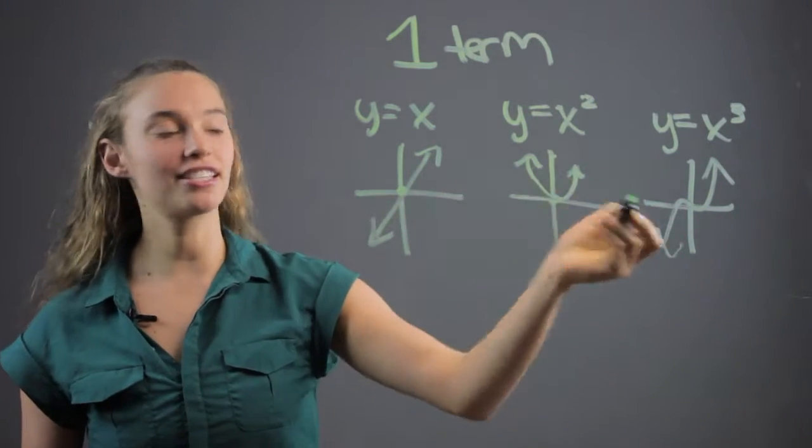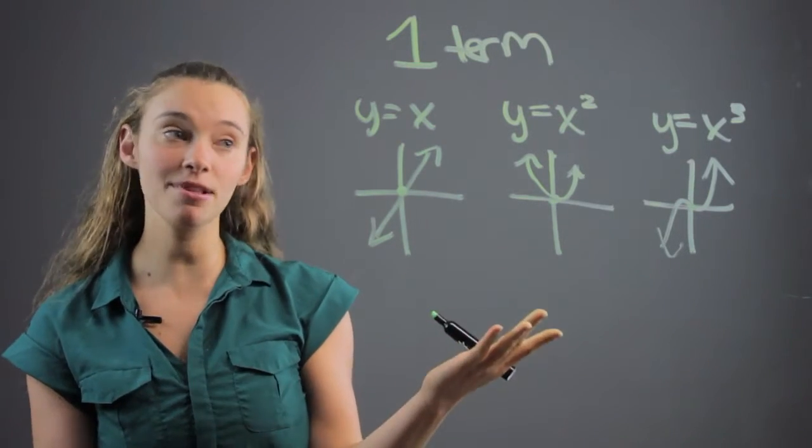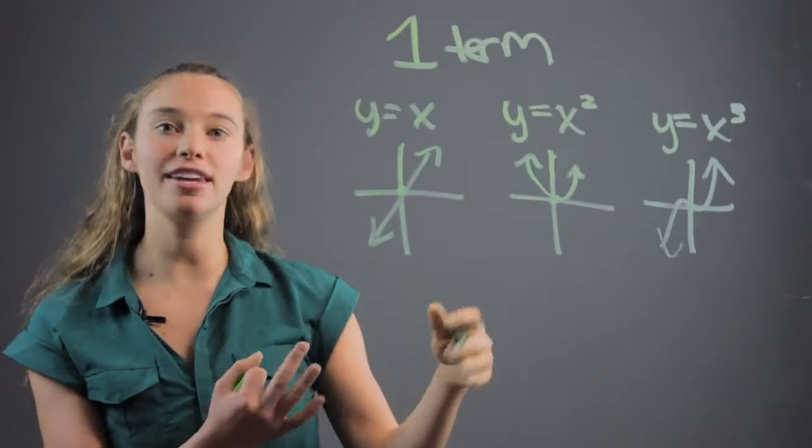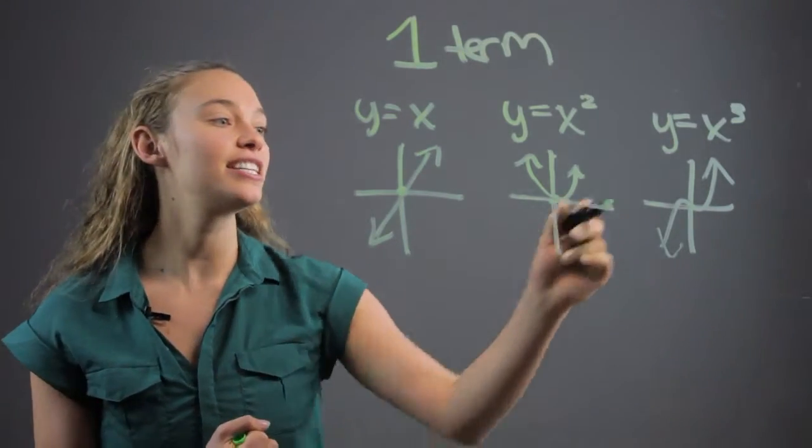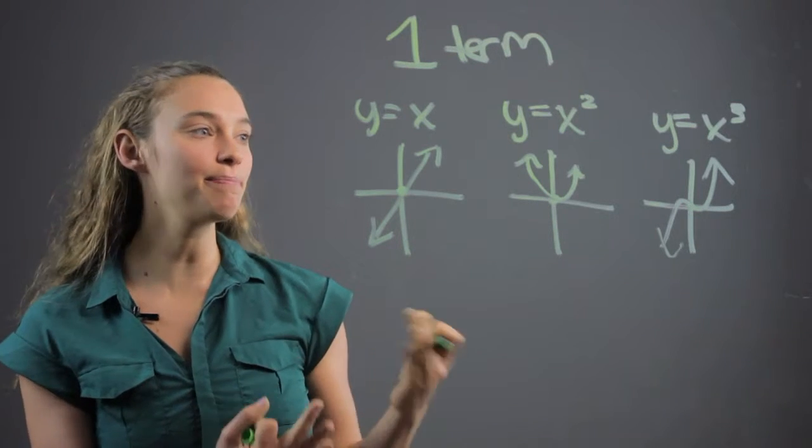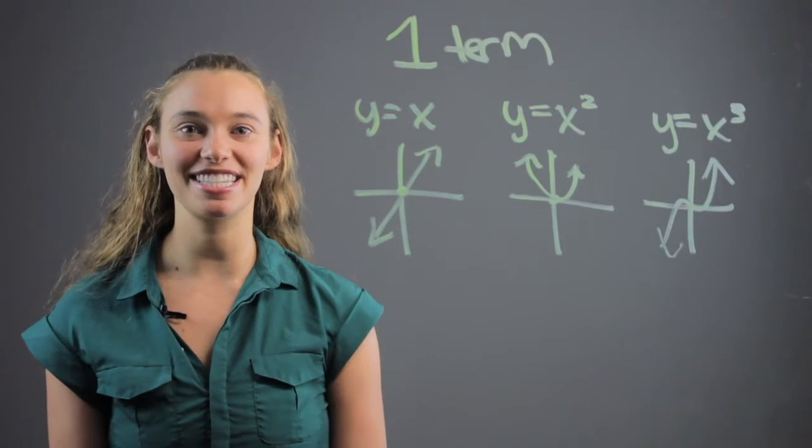In all these cases, they go through the origin, and all these can be found very simply just by using a table of values and plugging in different points like zero, one, and two, and all those numbers to see where they fall on the graph. And that's just a simple way of describing how to graph a monomial. I'm Rachel, and thank you for learning with me today.